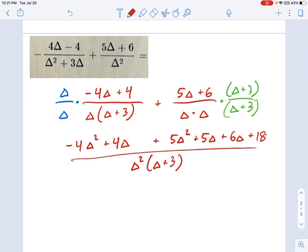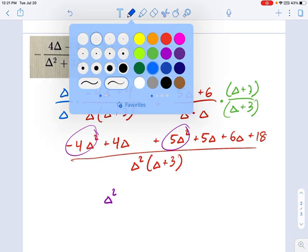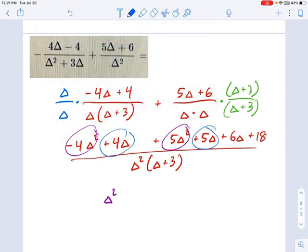Okay, now we combine like terms. So I have 5 delta squared and 4 delta squared makes a single delta squared. And I have a 5 delta and a 4 delta makes 9 delta. And I forgot my 6 delta sitting right there in front of my face, so that's going to be 15 delta.